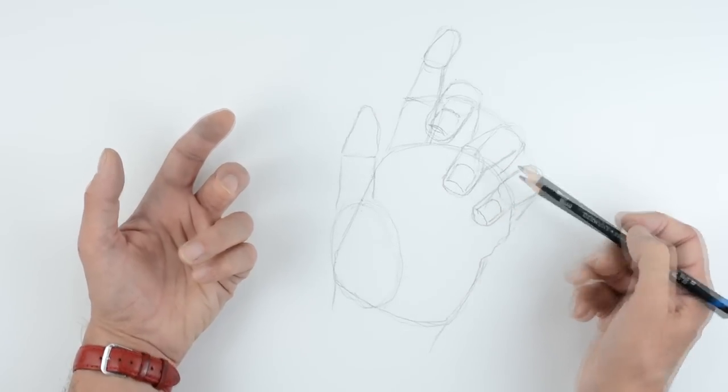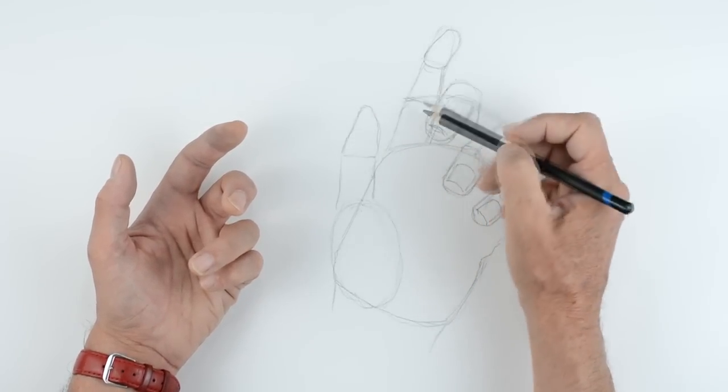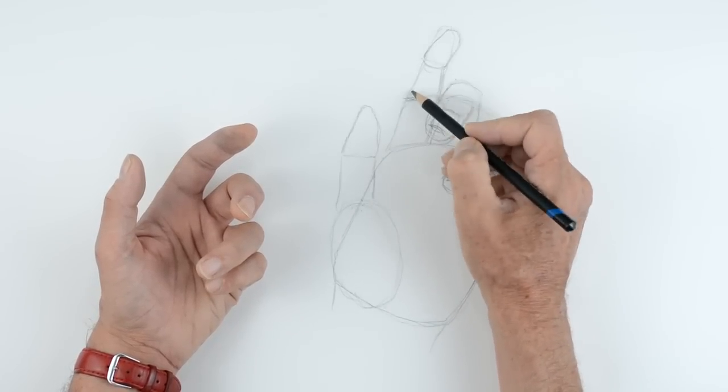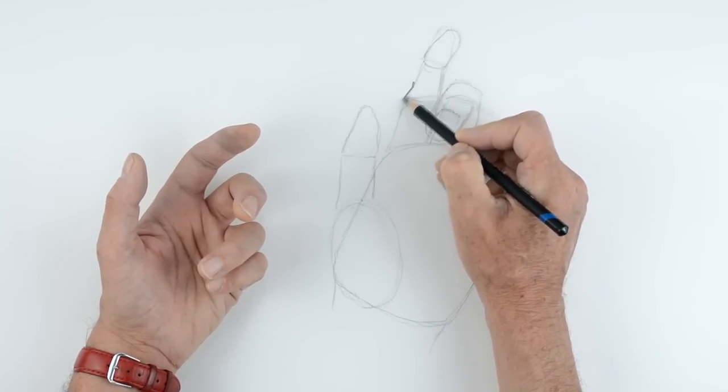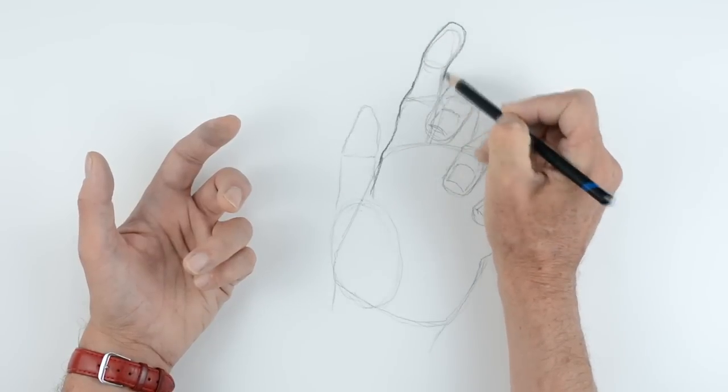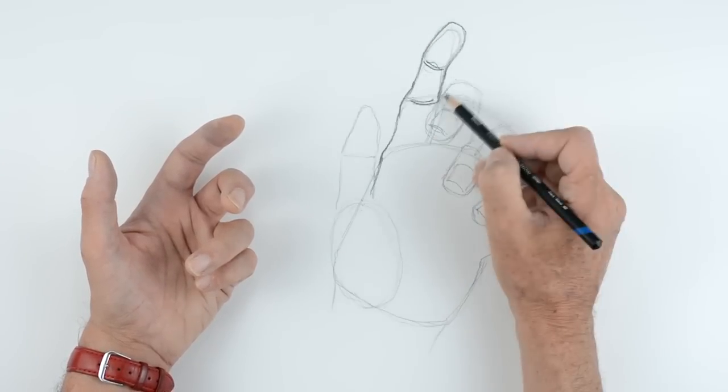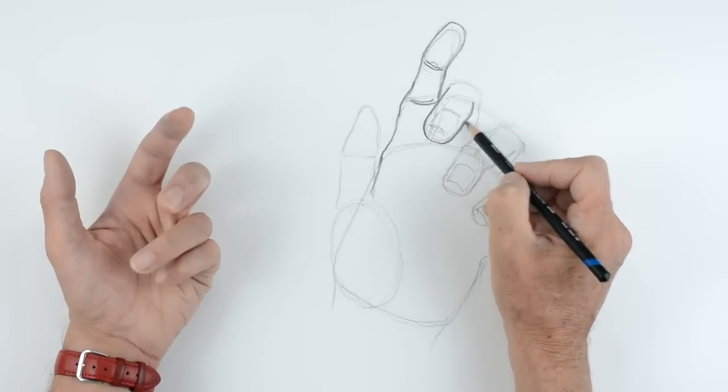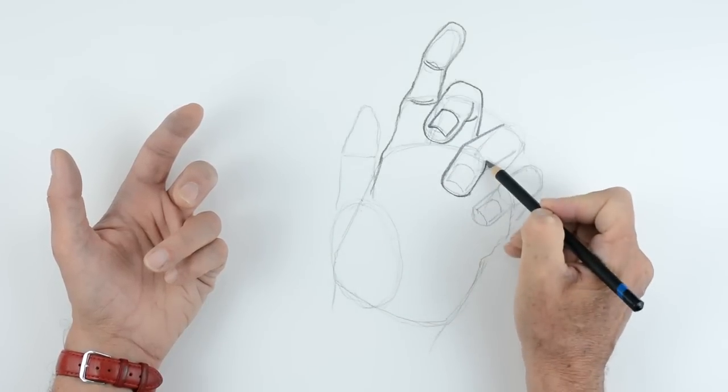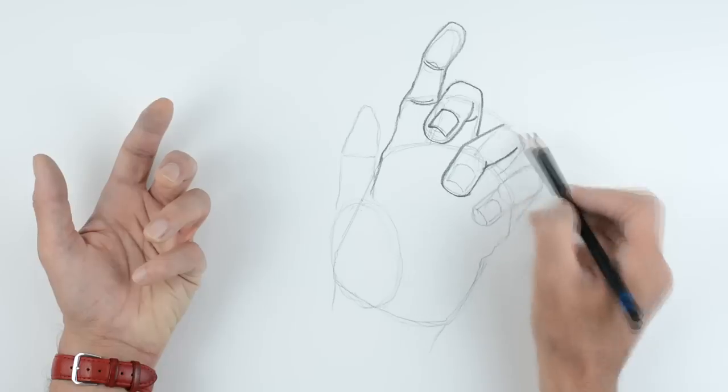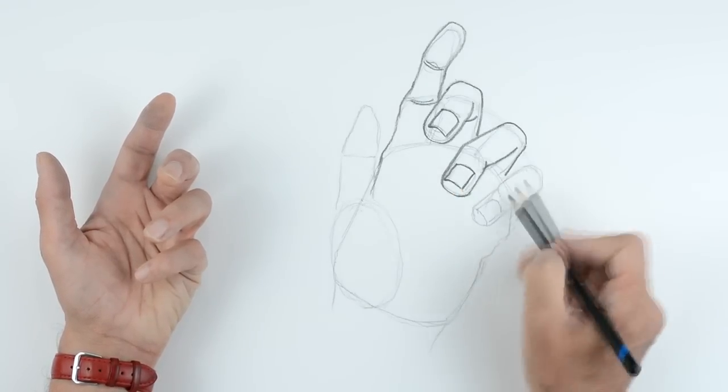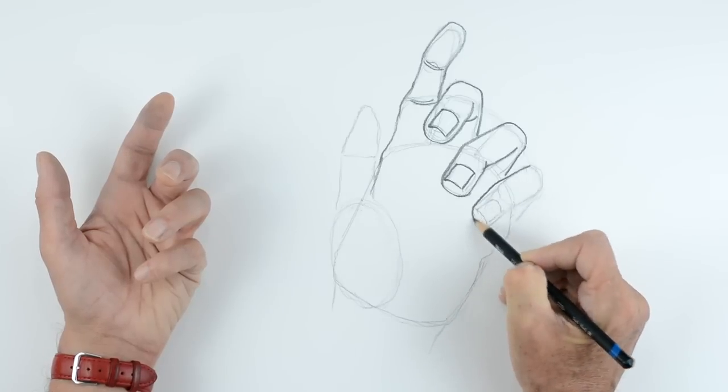Now what we can see here is we can start going over this. We start with this finger here, just going to go over this a little bit stronger, little bit of knuckle here, curves down, and the little knuckle comes up here, round. Same with this one, and finally this one too.